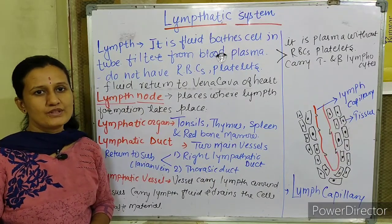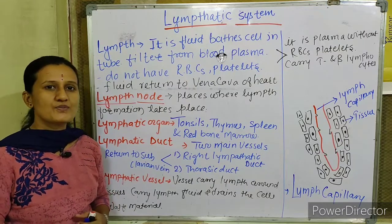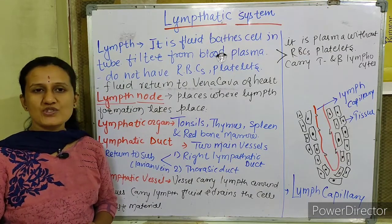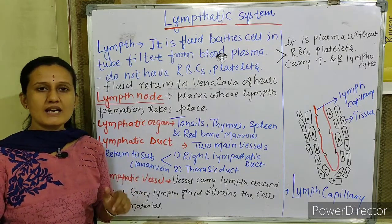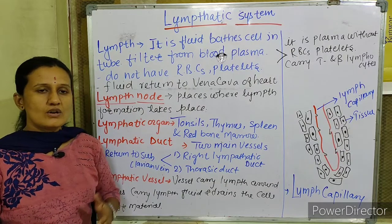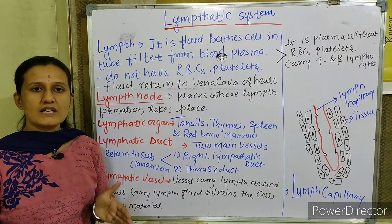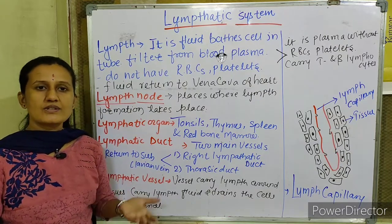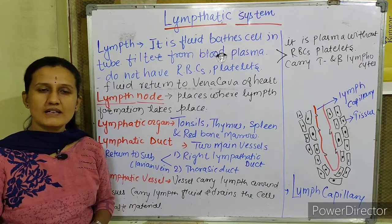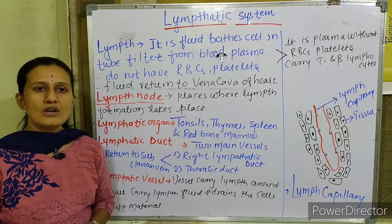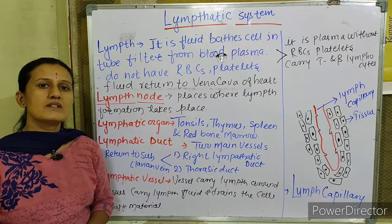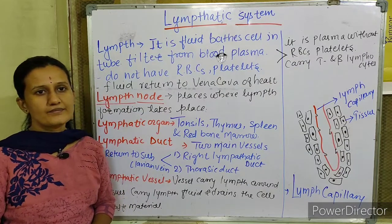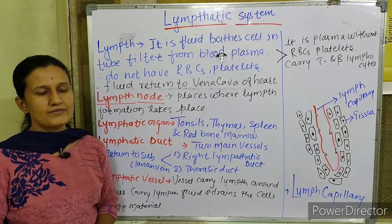Hello students, welcome. In today's video we are going to learn about the last point from respiration and circulation — that is the lymphatic system. The two main parts of the transport system are the blood vascular system and the lymphatic system. We entirely went through the vascular system: heart internal structure, external structure, pumping action, cardiac cycle, arteries, veins, and some disorders related with blood or heart.